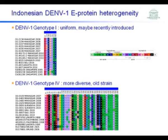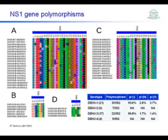We performed genetic analysis of the genome sequences of dengue viruses in Indonesia. For dengue 1, which has two genotypes — genotype 1 and genotype 4 — when we align the E-protein sequences, it is quite clear that genotype 1 is quite uniform, suggesting it may have been recently introduced and hasn't accumulated many mutations. In comparison, genotype 4 is quite diverse, with lots of polymorphism in the E-protein.